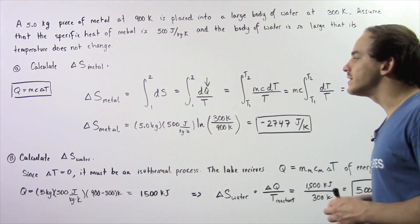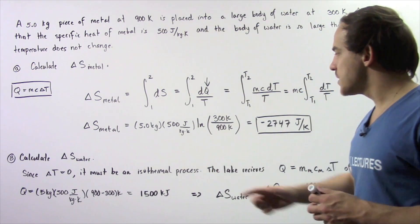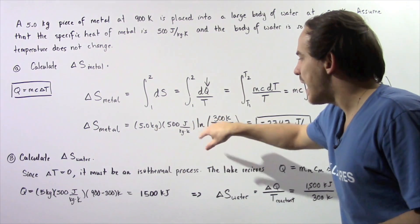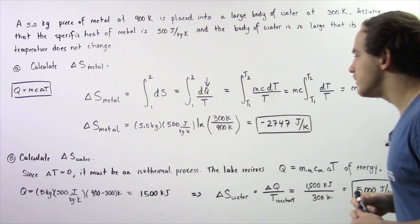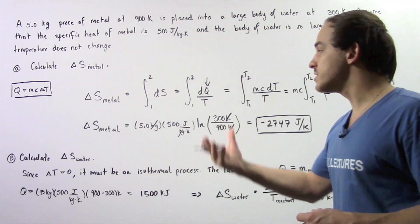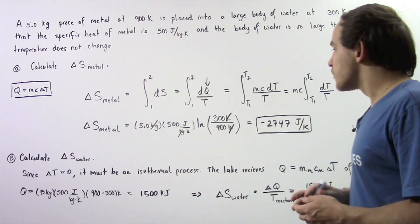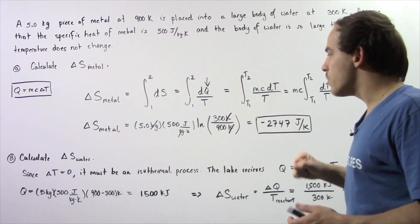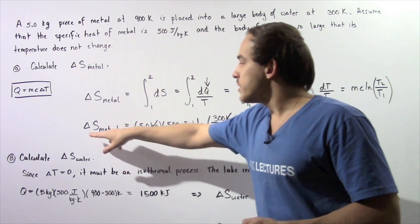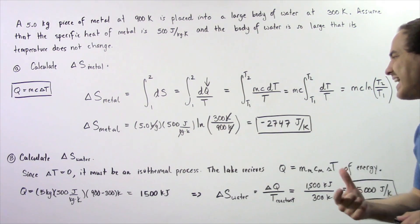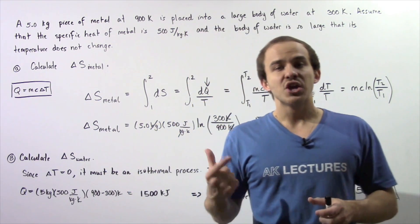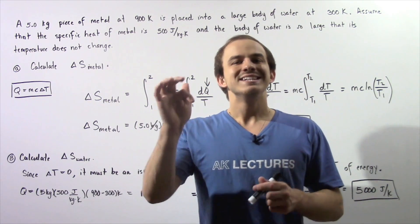Let's calculate this quantity. Our mass is 5 kg, our specific heat is 500 J per kg·K, and we multiply by the natural log of 300 K divided by 900 K. The K units cancel and the kg units cancel, so entropy has units of J per K. The natural log of a ratio smaller than 1 gives a negative value, so the change in entropy of the metal — our system — is negative 2747 joules per Kelvin. The negative sign implies the entropy of the metal decreases.